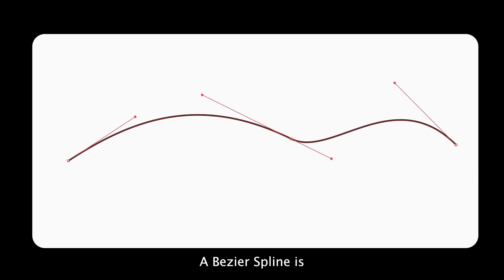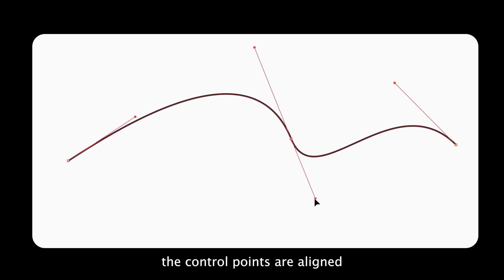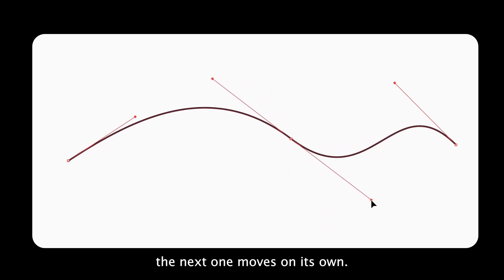A Bezier spline is just a bunch of Bezier curves stuck end-to-end. In many programs, the control points are aligned with each other. If you move one, the next one moves on its own. That's just to make the spline smooth. And there you have it folks, that's all you need to know about Bezier curves.